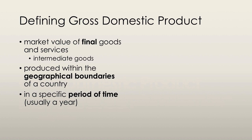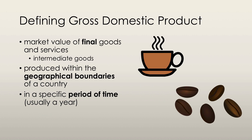There are three key parts to this definition. The first is that it includes the market value of all final goods and services. For example, if you go down to your local coffee store and buy a coffee, the coffee is considered a final good — one which is bought and consumed by its end consumer. You are the end consumer because you drink that coffee.